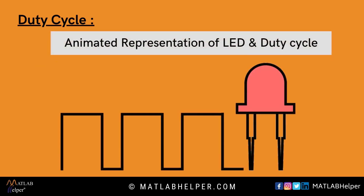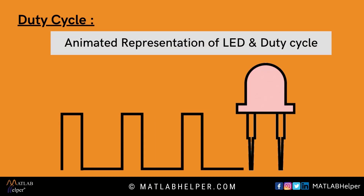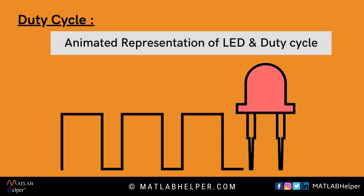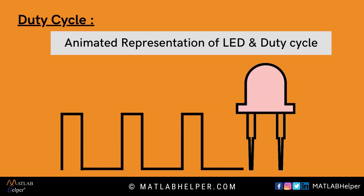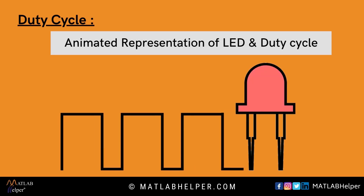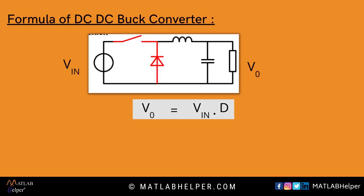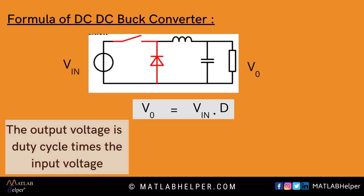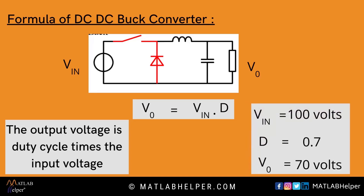This is an animated representation of how the value of duty cycle is directly proportional to the brightness of an LED. Now, let's go to the formula of the DC-DC buck converter. The output voltage equals the duty cycle times the input voltage. Hence, if the input voltage is 100V and the duty cycle is 0.7, then the output voltage is 70V.